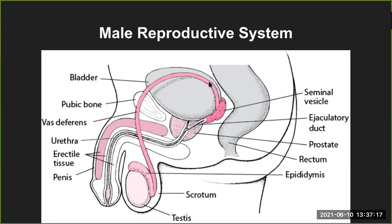What you see on the top is your urinary bladder. Just below that you will see a prostate gland, and below the prostate there is a Cowper's gland, which is not shown in this diagram but is located at the base of the penis. Then there is the pubic bone.